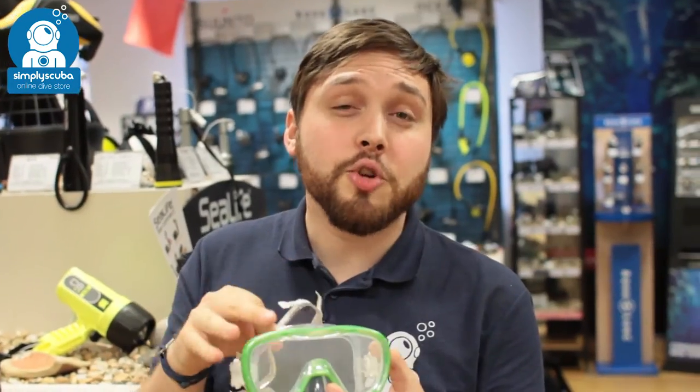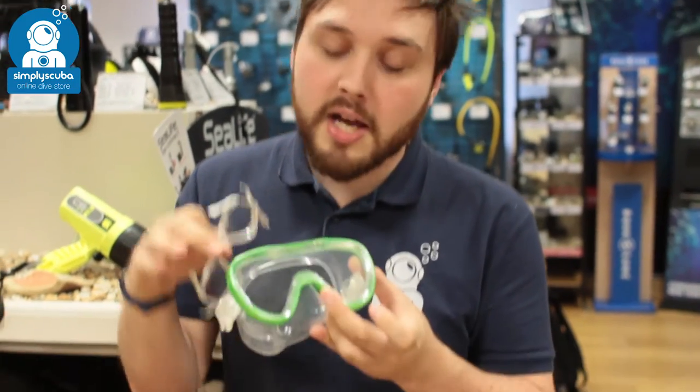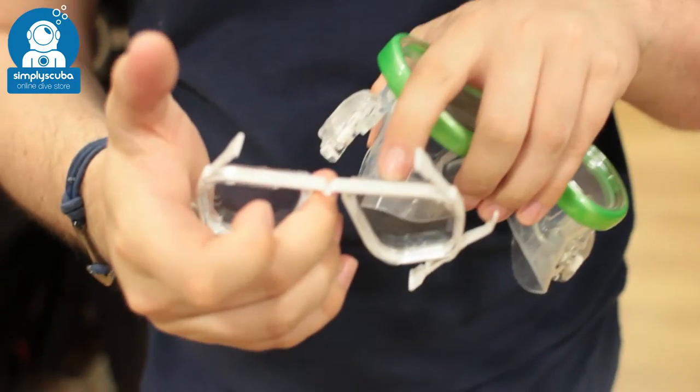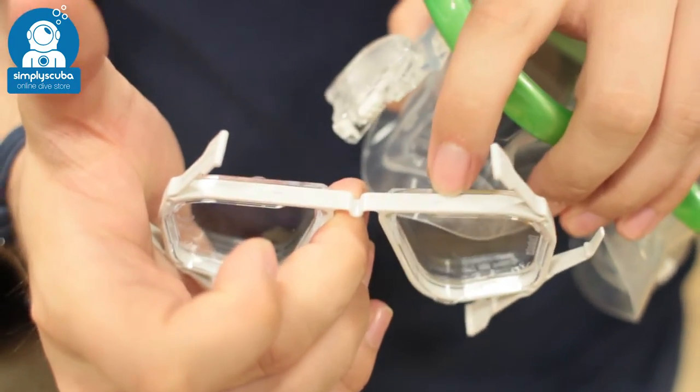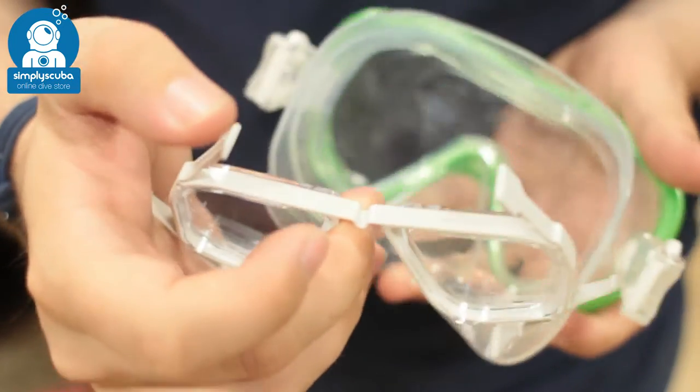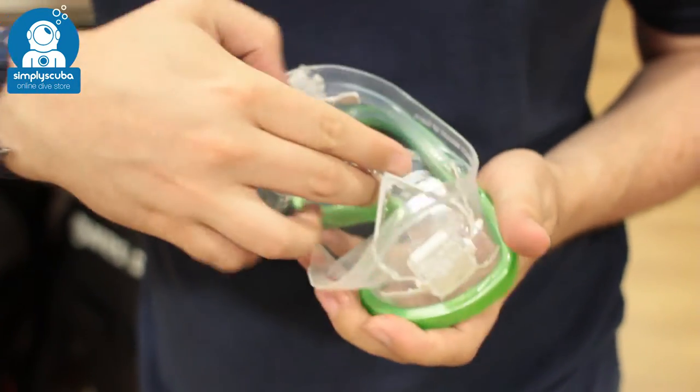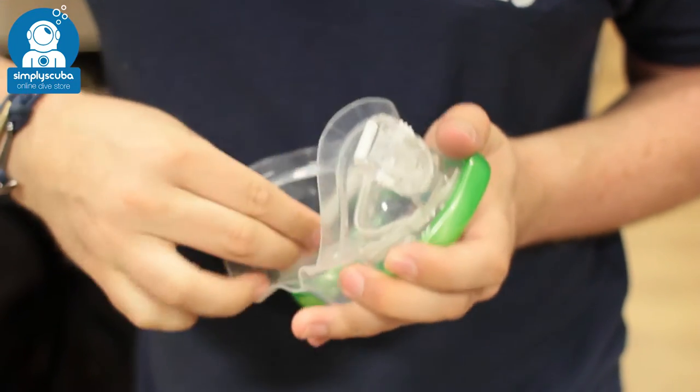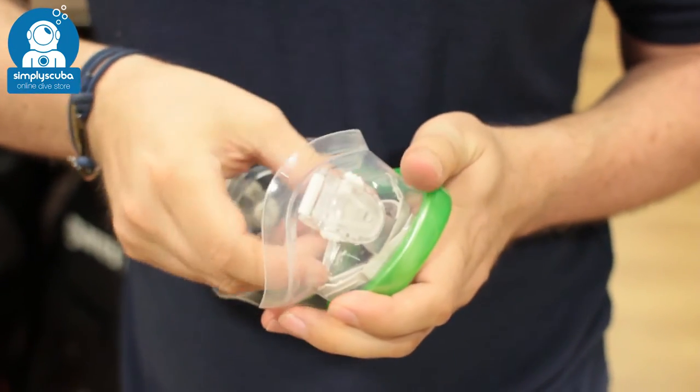Okay, so this is the TUSA Clio II mask. This is a nice compact little single frame mask, very simple. On the top of the lens frame, you've got these two little arrows. Those point towards the front of the mask. And then just pushing it into position, you can bend these little arms and bend the shape of the frame itself.